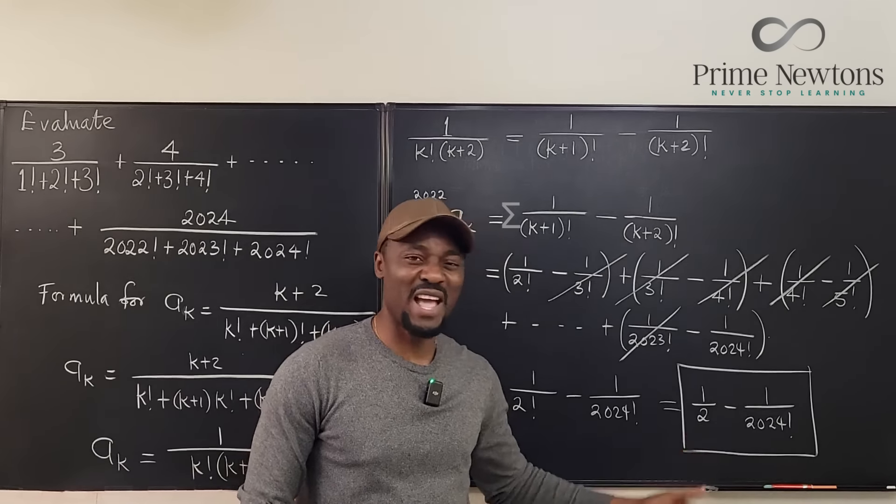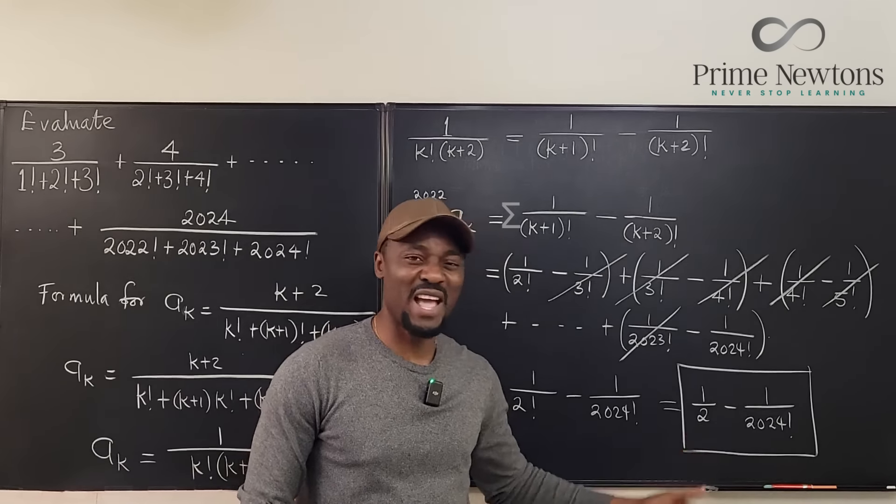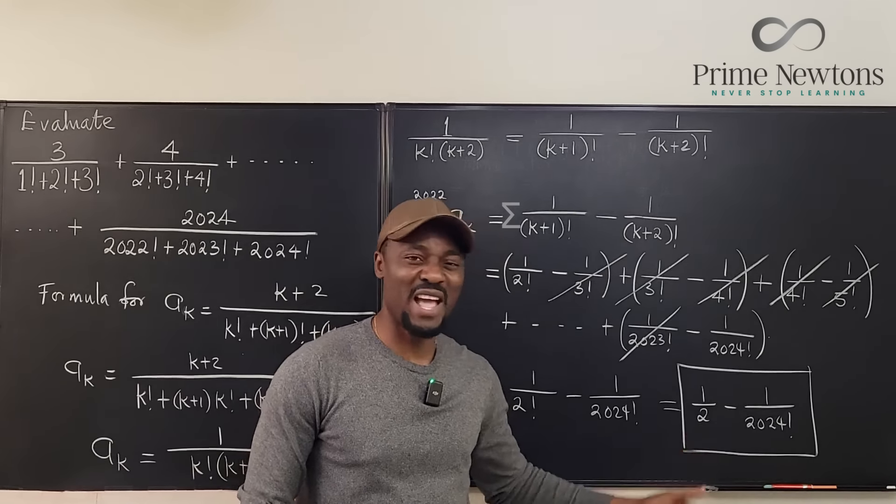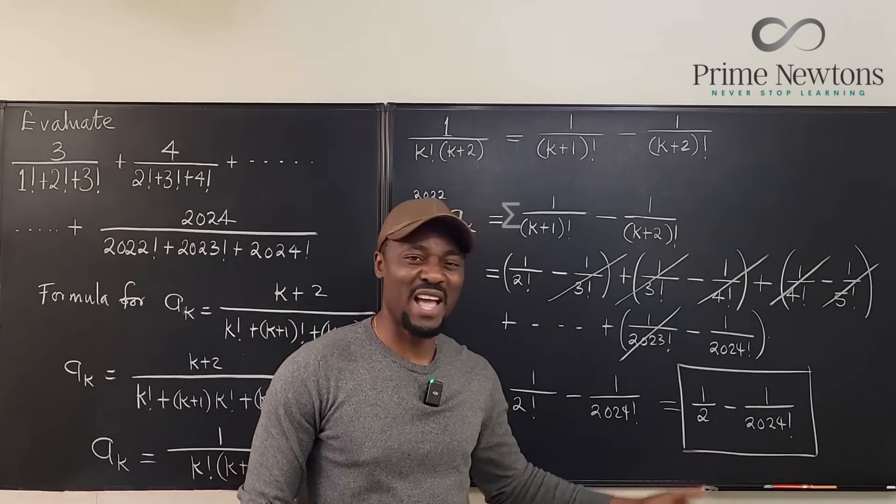By the way, one over 2024 factorial is a super small number, so you can say that one half is approximately the sum of what you see. Never stop learning — those who stop learning stop living.